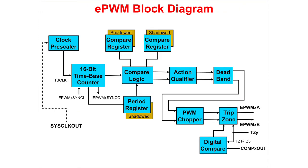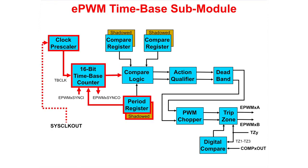The ePWM or enhanced PWM block diagram consists of a series of submodules. In the time-based submodule, the clock prescaler divides down the device core system clock and clocks the 16-bit time-based counter. The time-based counter is used to generate asymmetrical and symmetrical waveforms using three different count modes: count up mode, count down mode, and count up and down mode. A period register is used to control the maximum count value. Additionally, the time-based counter has the capability to be synchronized and phase shifted with other ePWM units.